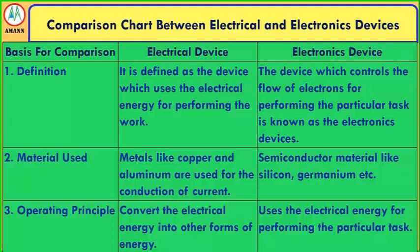Comparison chart — Definition: An electrical device is defined as a device which uses electrical energy for performing work. An electronic device is one that controls the flow of electrons to perform a particular task. For material use: electrical devices use metals like copper and aluminum for conduction of current, whereas electronic devices use semiconductor materials like silicon and germanium.